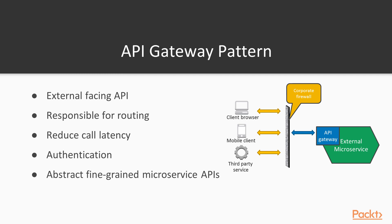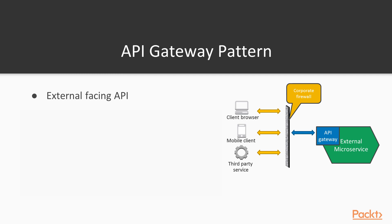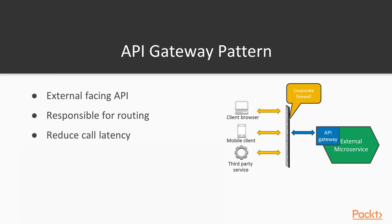The API gateway pattern is used when you need an external-facing API, so that an external service only needs access to one endpoint to make any of the requests. This service is responsible for routing any requests from outside the corporate firewall, as well as things like monitoring and throttling of request calls. It can also help reduce the latency of requests via caching very frequent requests, and it can act as a mechanism to authenticate users and services to make sure they are authorized to make the actual request.